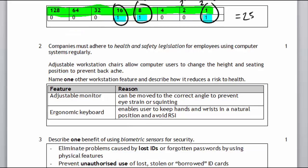Now question 2 they're talking about health and safety and it's to do with your actual workstation. They're always saying name one other workstation feature and describe it. So one example is adjustable monitor - you can adjust it and you're not going to prevent eye strain or getting a sore neck. You've also got an ergonomic keyboard and that prevents repetitive strain injury. It's a keyboard that's slightly twisted so you're actually sitting in more of a natural position.